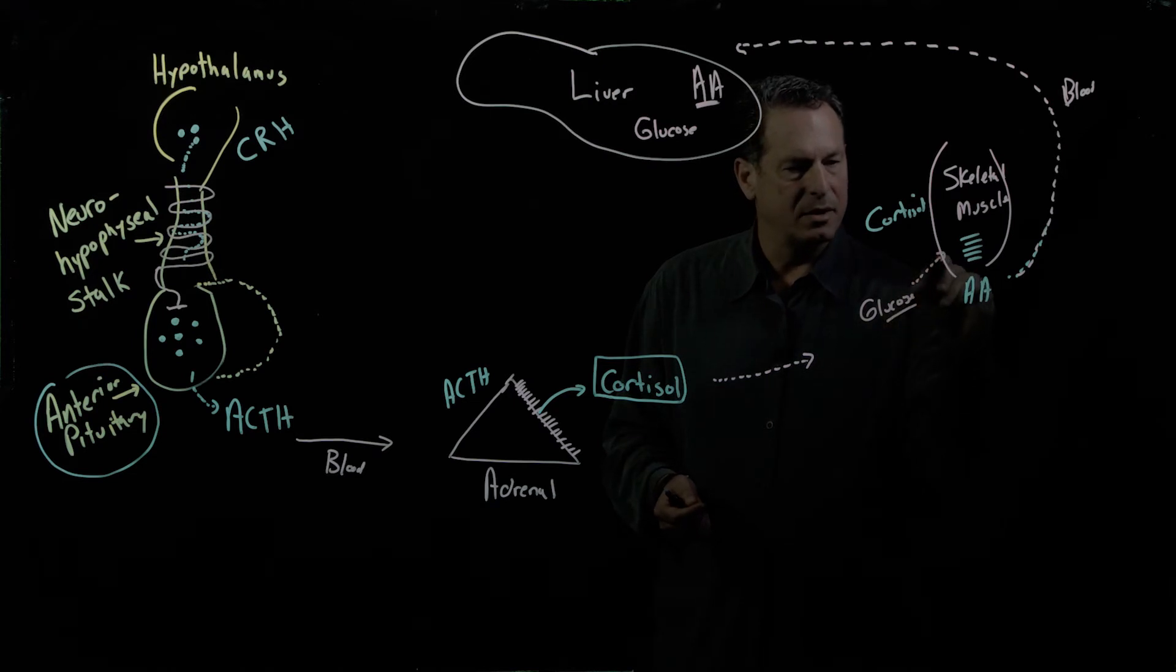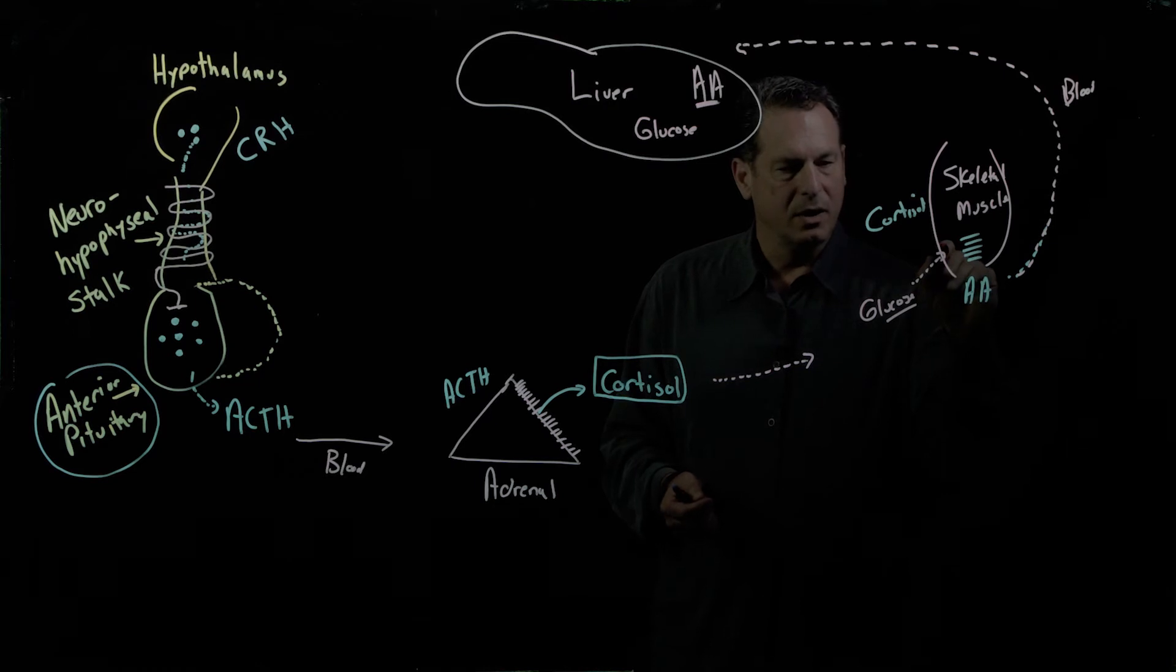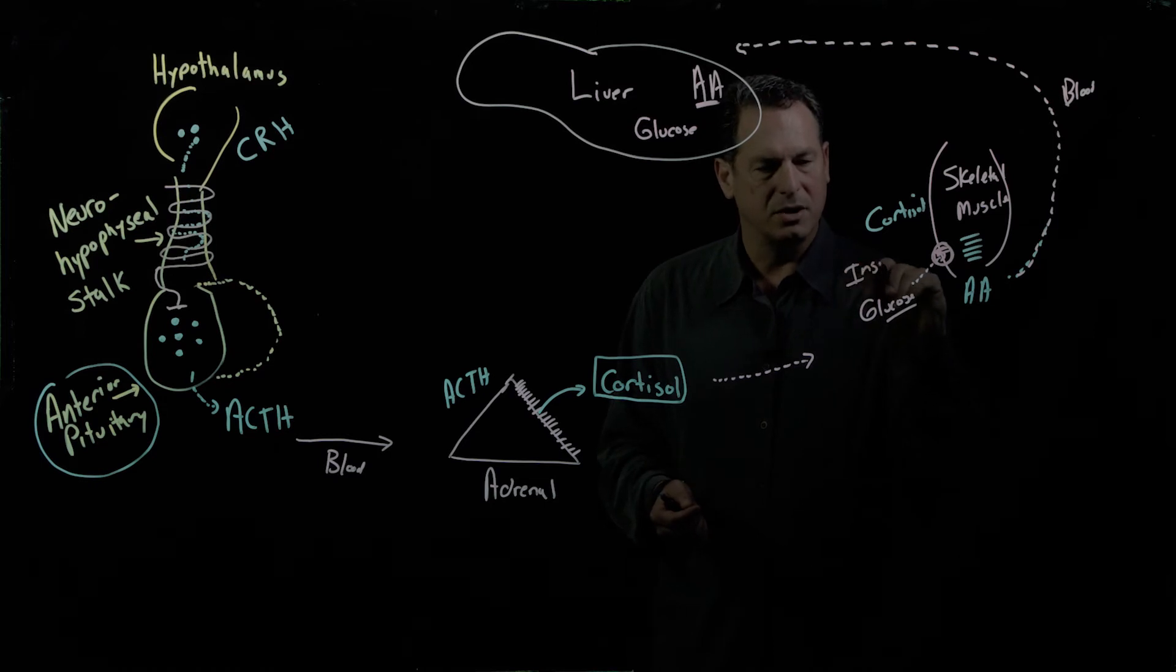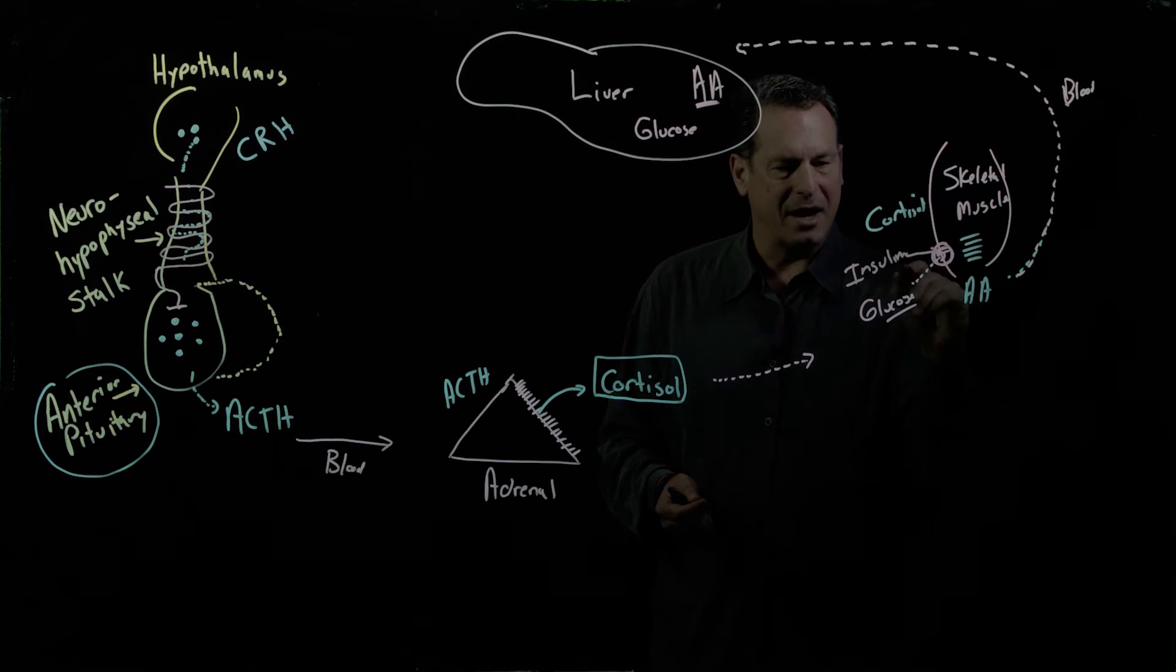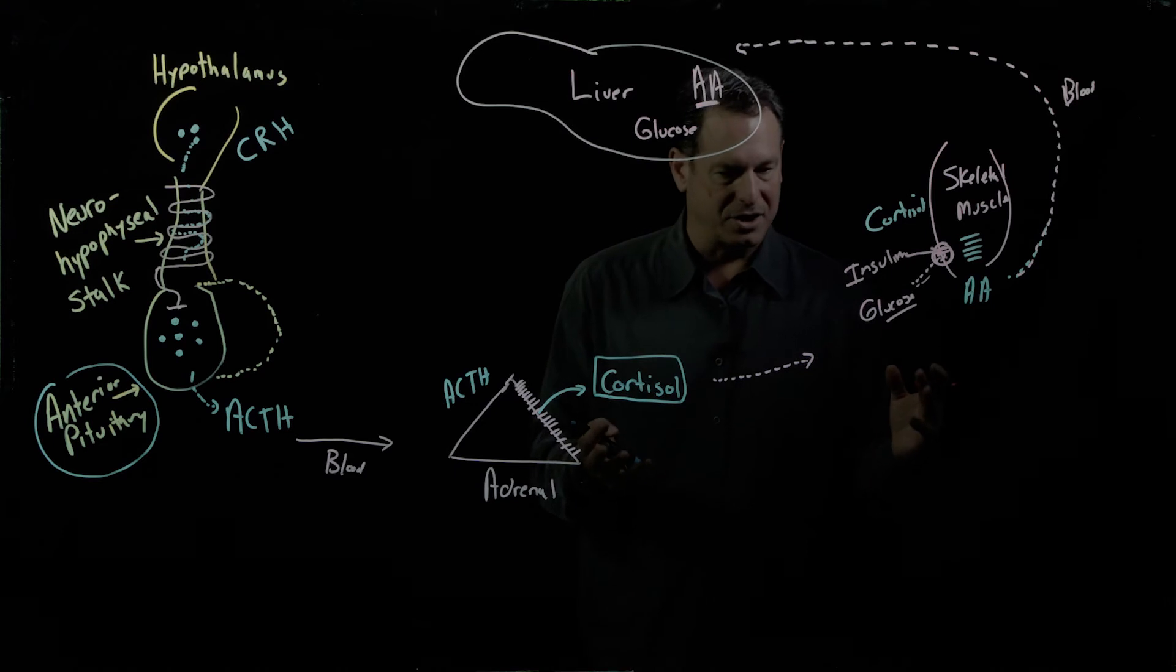because there are insulin dependent glucose uptake mechanisms where glucose just doesn't freely float into the skeletal muscle, especially when it's at rest. It requires a transporter to come to the membrane from inside,